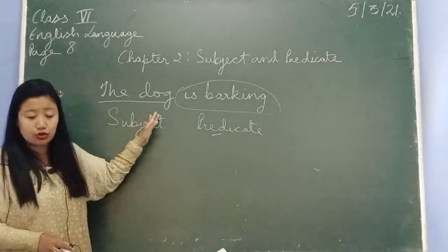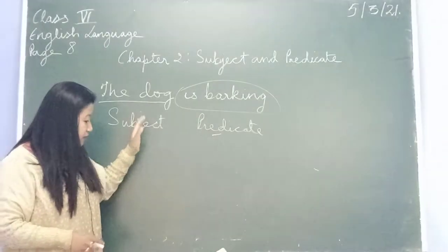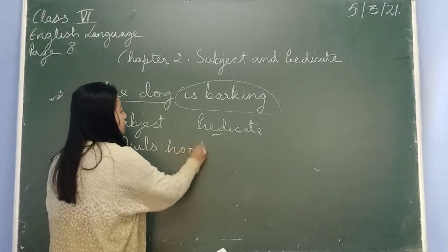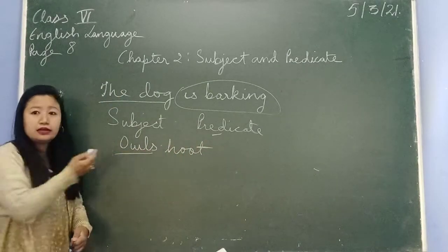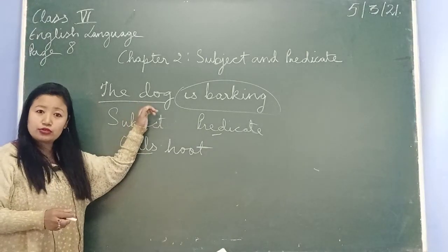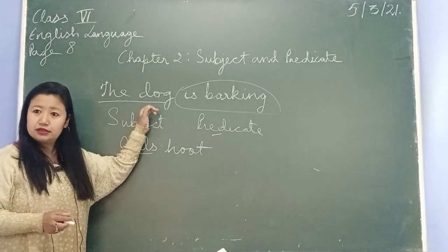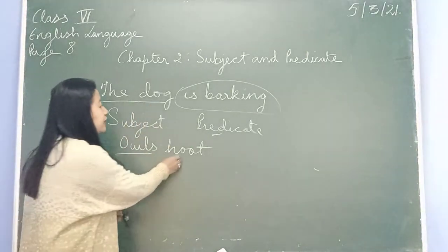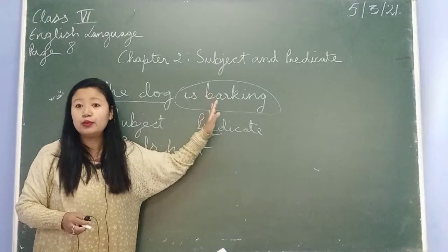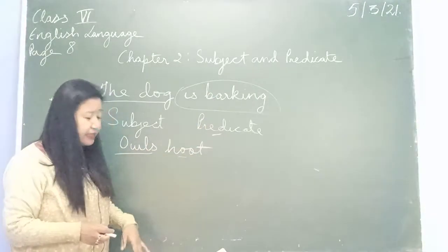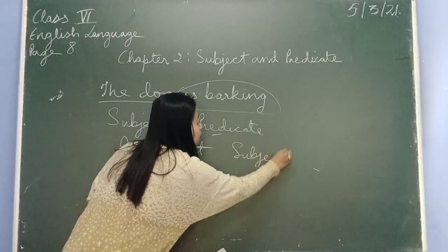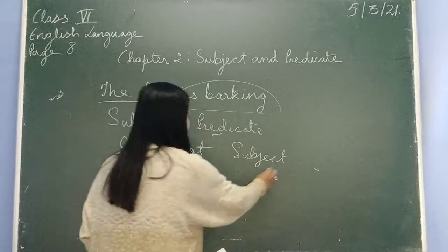Like you can have two words — 'the old dog.' In your book you have 'owls hoot,' so you can have one or more than one word as a subject. Even for the predicate, you can have one word or more than one word as your predicate. Then we started learning about the subject word.